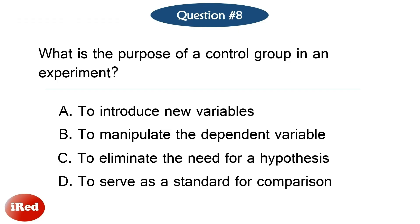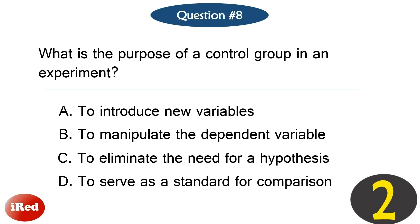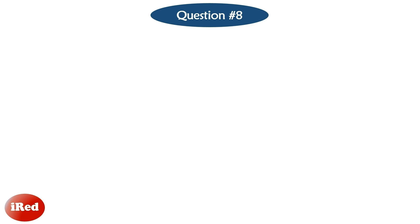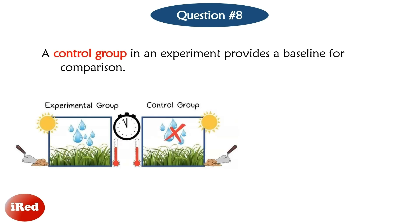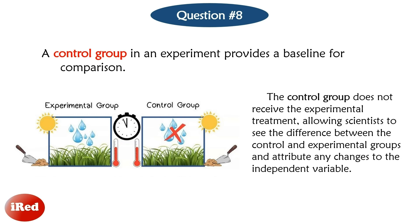Question number 8: What is the purpose of a control group in an experiment? The correct answer is letter D. A control group in an experiment provides a baseline for comparison. The control group does not receive the experimental treatment, allowing scientists to see the difference between the control and experimental groups and attribute any changes to the independent variable.